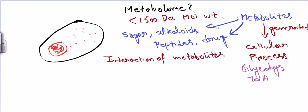Metabolite interactions are really important, because once we know all the metabolic profile inside the cell — how all the metabolomes or metabolites are generated and how they are interacting — we can build what is called a metabolomic map. So you can build a metabolomic profiling inside our body.